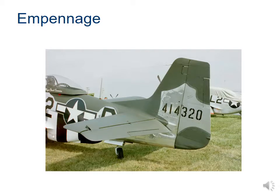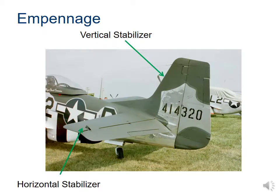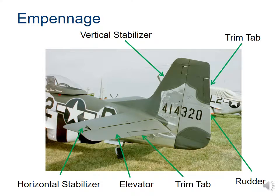Here's the empennage on another plane where you can see the demarcation on the rudder and elevator a little better. You can identify the vertical stabilizer — the up-and-down part — the horizontal stabilizer — the left-to-right part — the rudder on the back, and the elevator on the horizontal stabilizer. Both the rudder and the horizontal stabilizer have a small tab called a trim tab, which can be moved slightly relative to the rudder or elevator to provide an additional level of control for even more maneuverability.